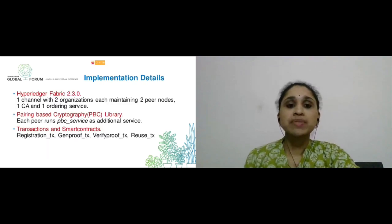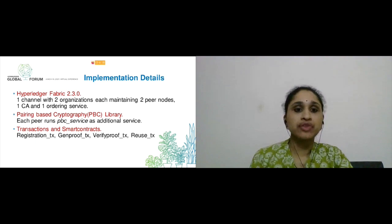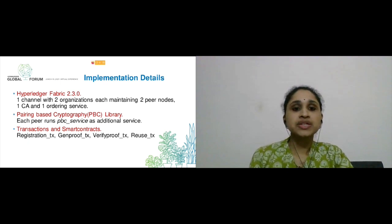We implemented this using Hyperledger Fabric 2.3. We created a single channel with two organizations, each having two peer nodes, a certificate authority, and an ordering service. Our BLS-based scheme was implemented using pairing-based crypto library. Each peer runs a PBC service as an additional service. We have implemented four smart contracts, one each for registration phase, proof generation, verification, and reuse.